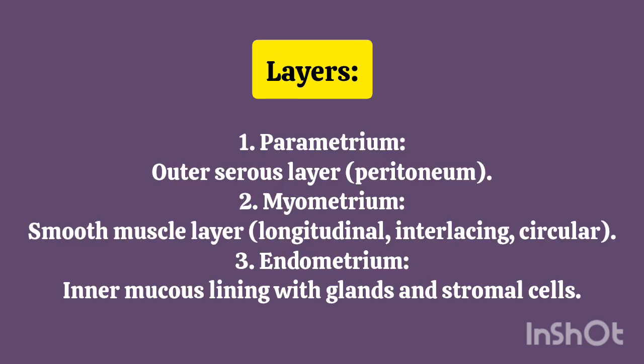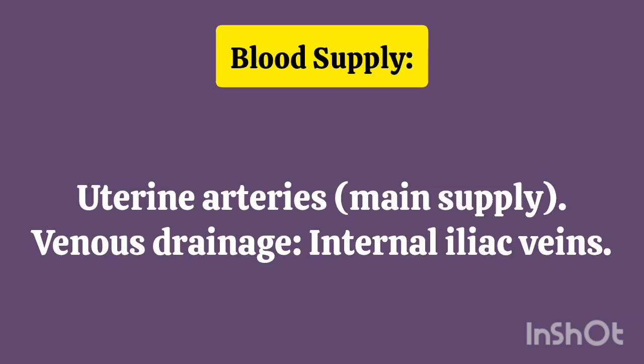Layers: 1. Parametrium – Outer Serous Layer – Peritoneum. 2. Myometrium – Smooth Muscle Layer – Longitudinal, Interlacing, and Circular. 3. Endometrium – Inner Mucus Lining with Glands and Stromal Cells. Blood Supply – Uterine Arteries – Main Supply.